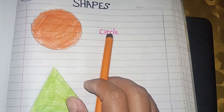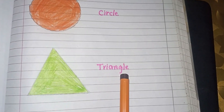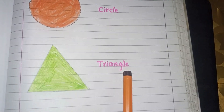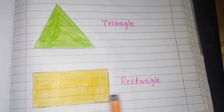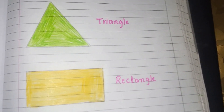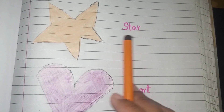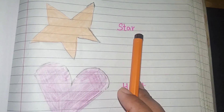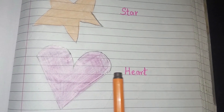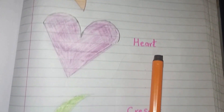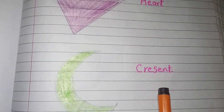It's Circle. Circle. Triangle. Triangle. Rectangle. Rectangle. Star. Star. Heart. It's Heart shape. Crescent.